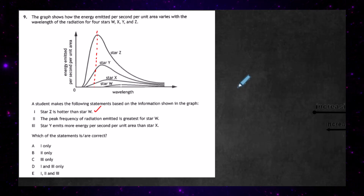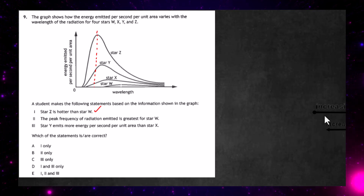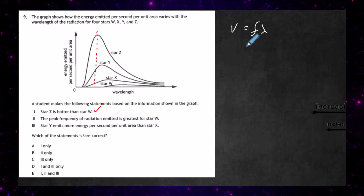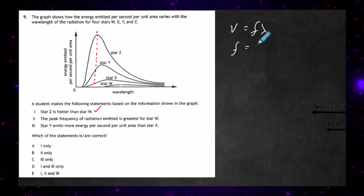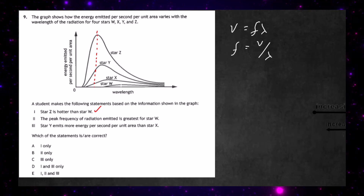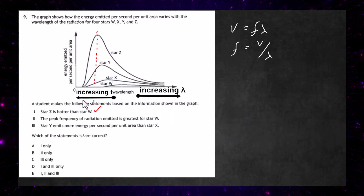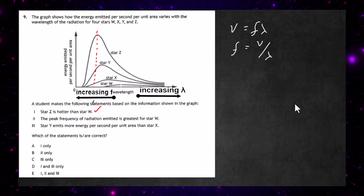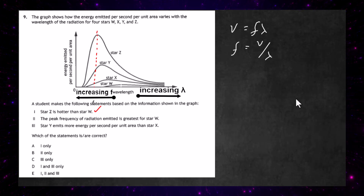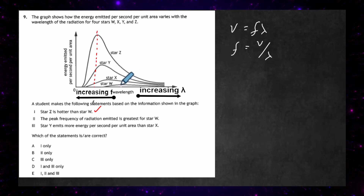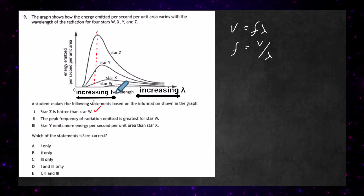Statement two: the peak frequency of radiation emitted is greatest for star W. The graph shows wavelength, but they're talking about frequency. Remember that v equals lambda times f, so frequency equals speed divided by wavelength. As wavelength increases along the graph, frequency must be decreasing — frequency is actually increasing in the opposite direction. So the hotter stars have the higher frequency. Star W's peak is at the low end of the frequency scale.